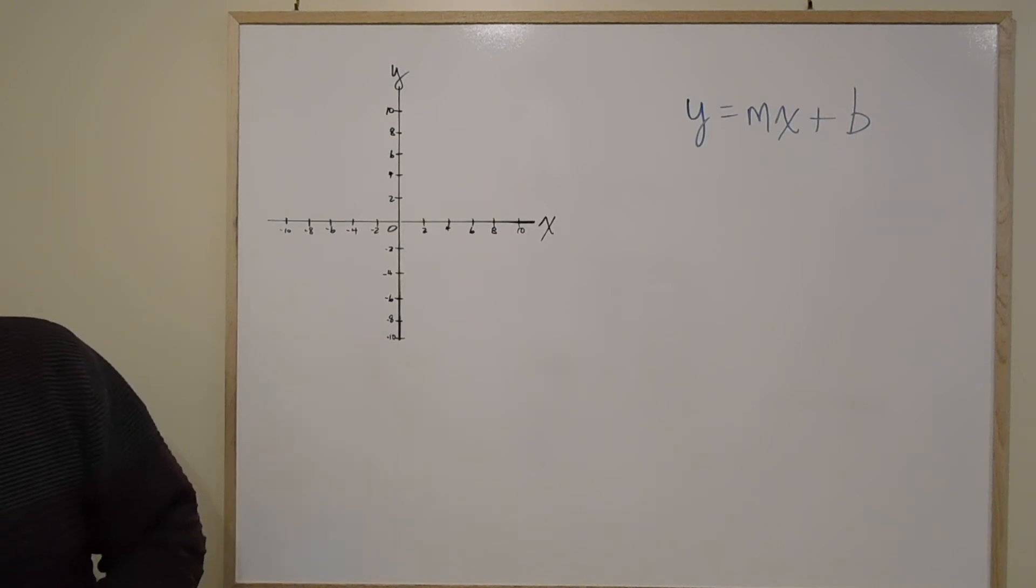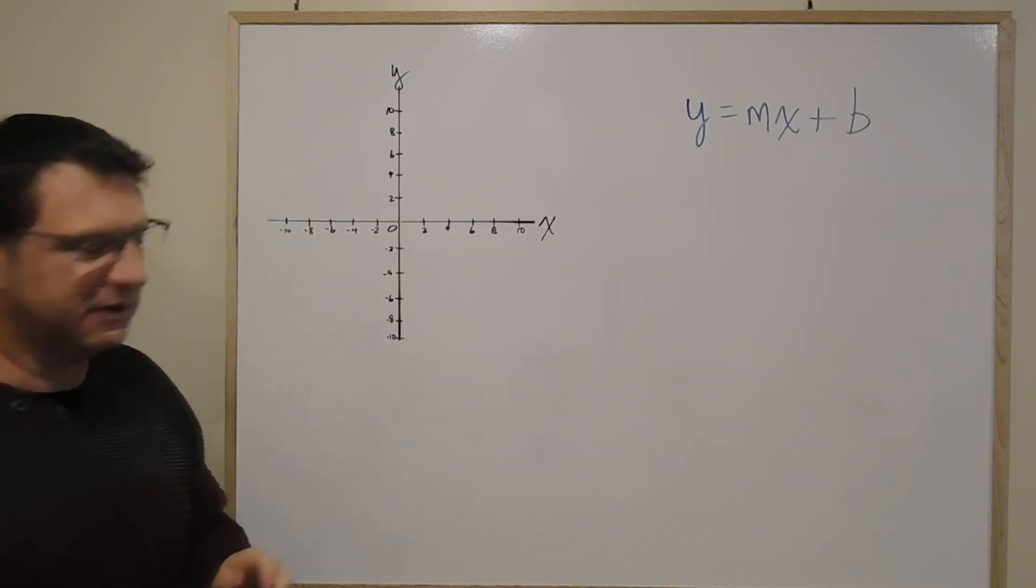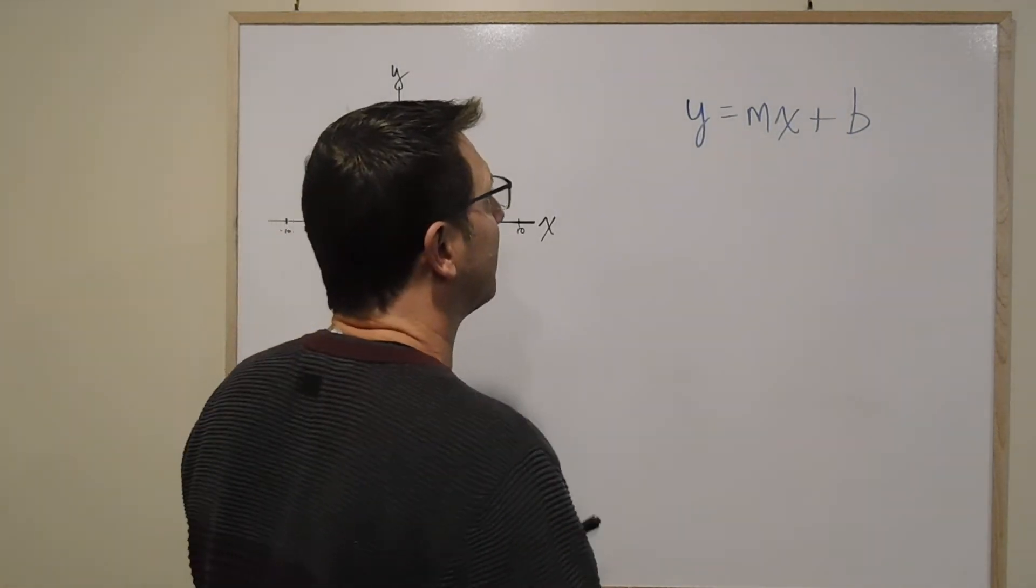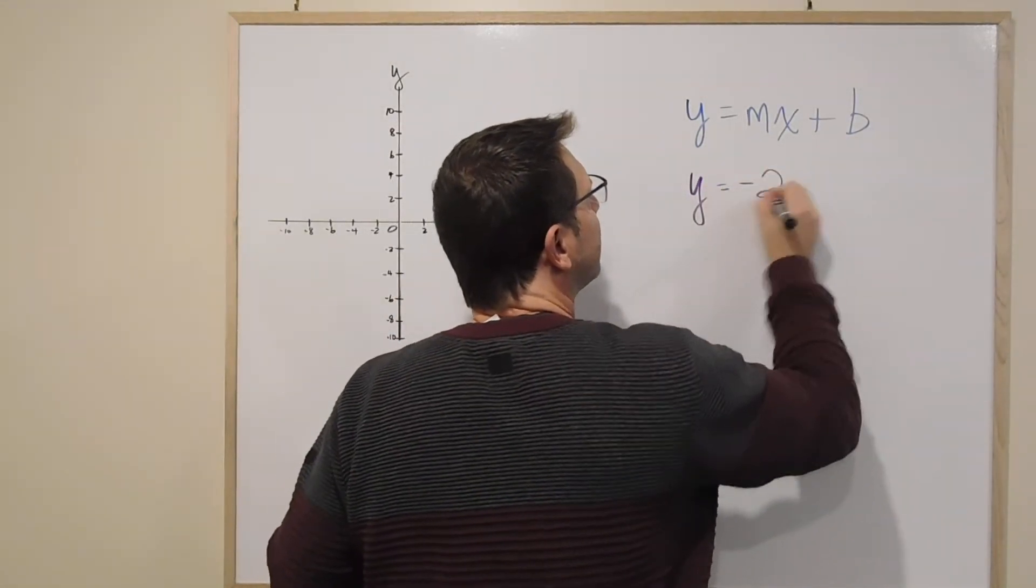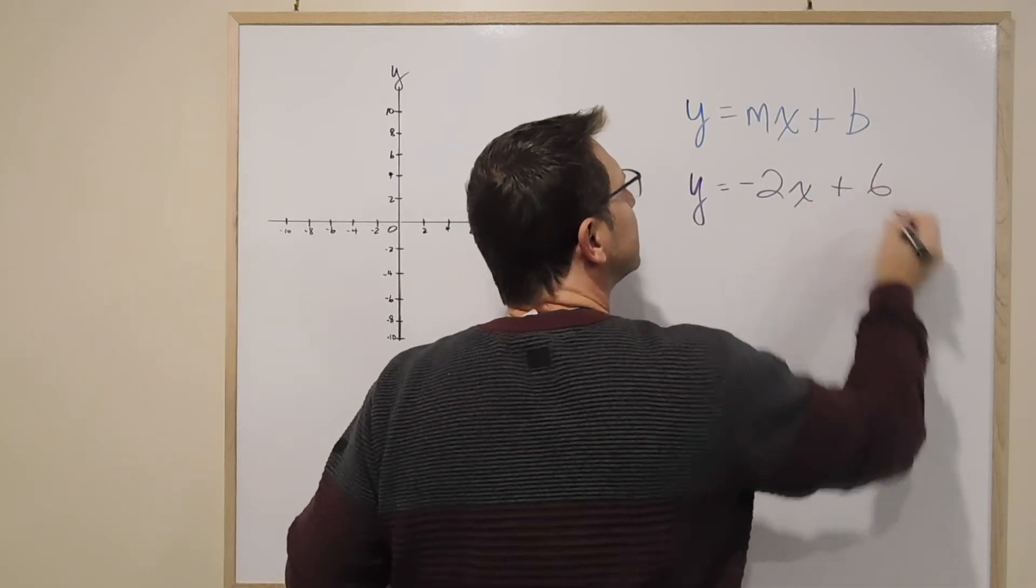So the example we had here, y equals negative 2x plus 6. So let's just write that one down. I'll use purple. y equals negative 2x plus 6.